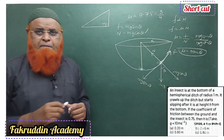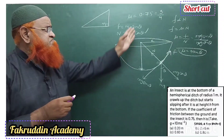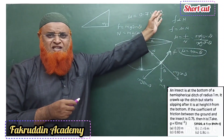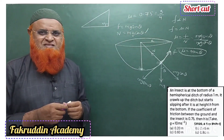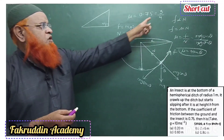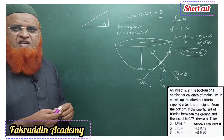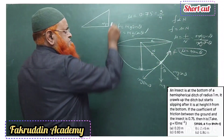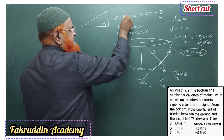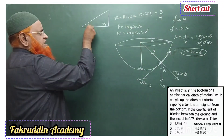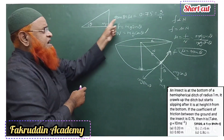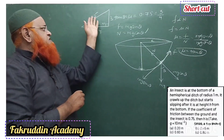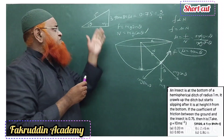In this problem μ = 0.75, which equals three-fourths. Since μ = tanθ, tanθ = 3/4. Using this as a 3-4-5 right triangle, the opposite side is 3, adjacent is 4, and the hypotenuse by Pythagoras theorem is 5.